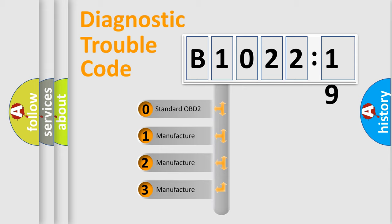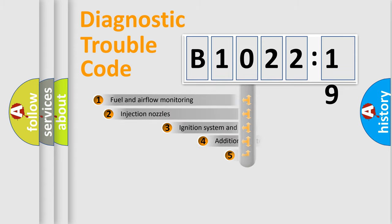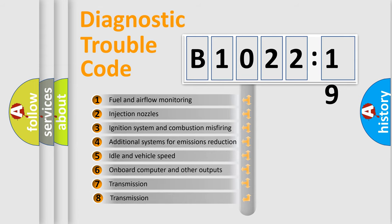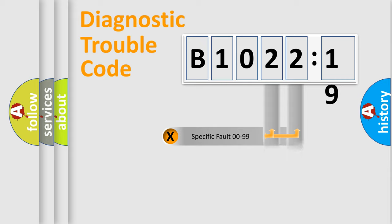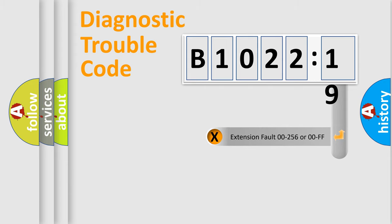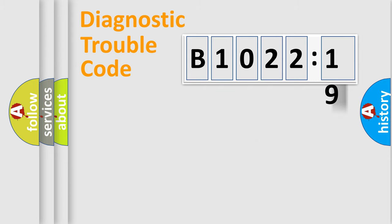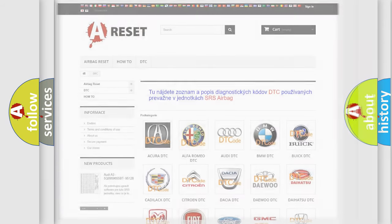If the second character is expressed as zero, it is a standardized error. In the case of numbers 1, 2, or 3, it is a more manufacturer-specific error. The third character specifies a subset of errors. This distribution is valid only for the standardized DTC code. Only the last two characters define the specific fault of the group. The add-on to the error code serves to specify the status in more detail — for example, a short to ground. Such a division is valid only if the second character code is expressed by the number zero.